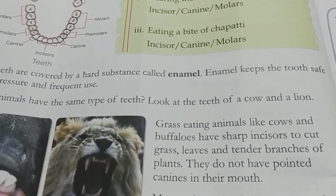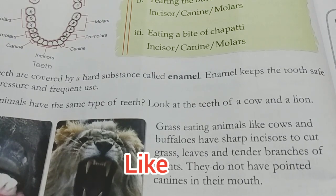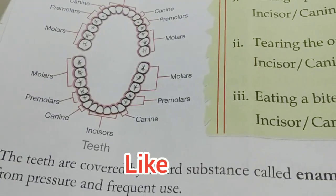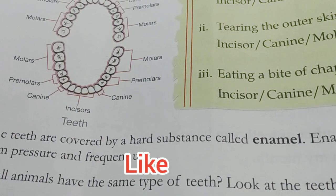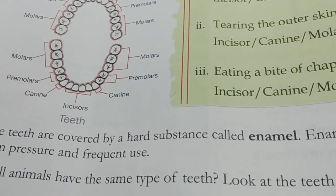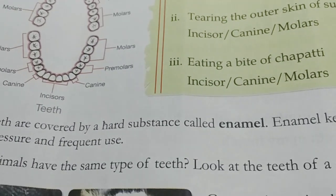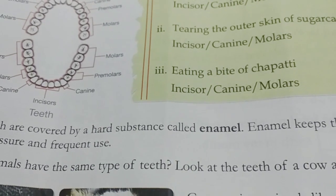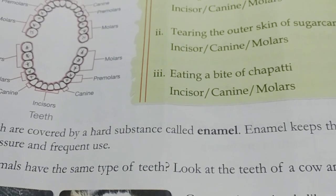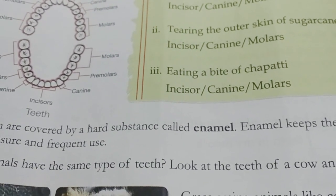The four types of teeth are incisors, canines, molars, and premolars. Incisors help us in cutting food, canines help in tearing food, and premolars and molars help to grind the food.